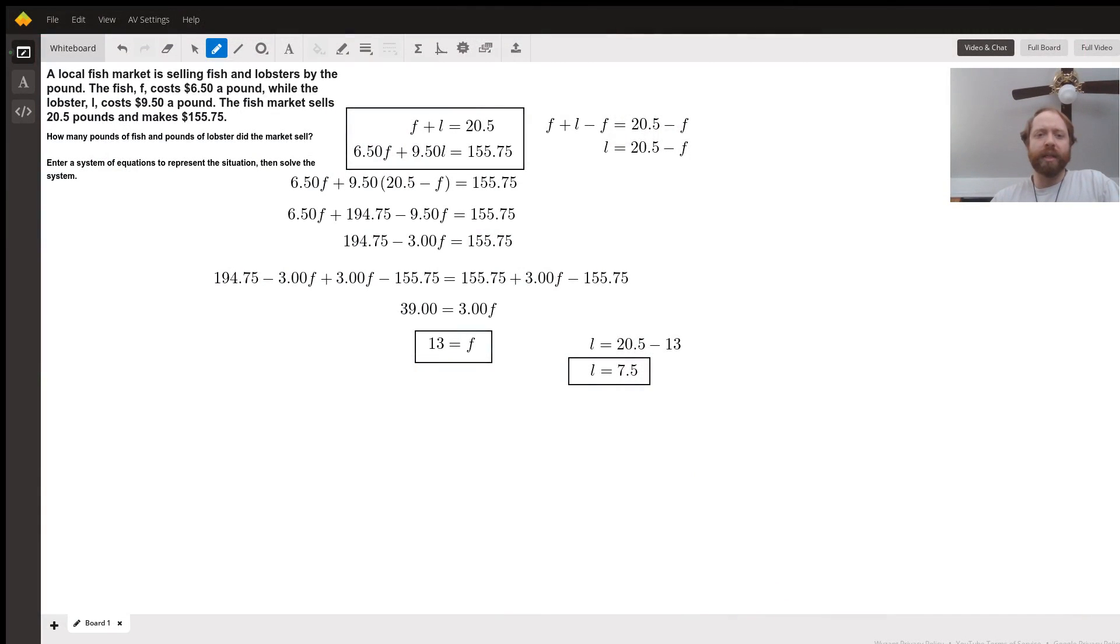Alright, so this problem is asking us to set up and solve a system of equations based on the information given in the problem. We're given that fish costs $6.50 a pound, lobster costs $9.50 a pound, and a total of 20.5 pounds is sold to make $155.75.